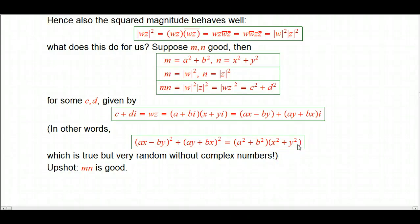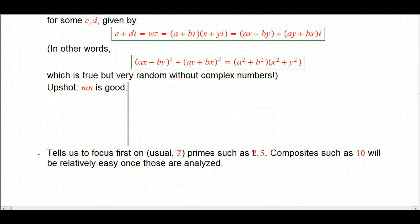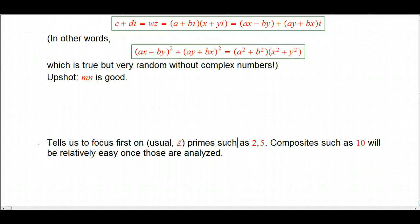So the upshot is that when I have 2 good numbers, the product is going to be good. One of the things this suggests is let's not worry about composites too much. Let's worry about the primes in the ordinary integers. And then figure out composites later. And in fact, I'm not even going to do the whole story of the composites. It's not super complicated once you understand the primes. That's one reason, and we'll see other reasons why we'd want to focus on the primes.